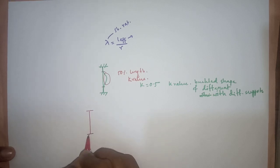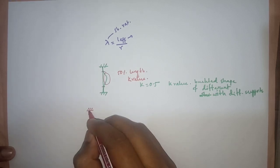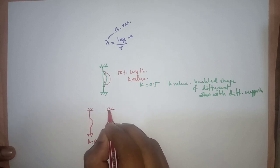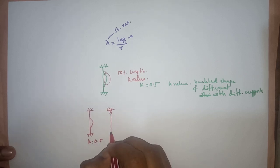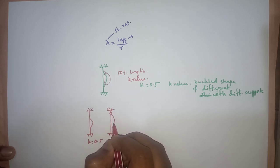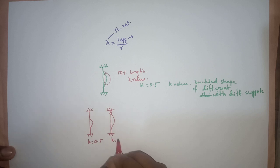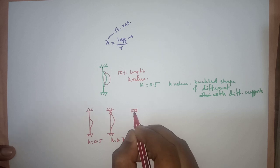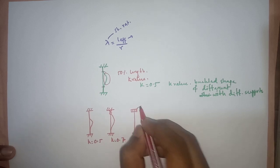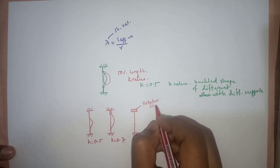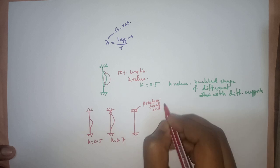If both ends are fixed, this buckled shape will be shown, and k is equal to 0.5. If one end is pin-connected and the other end is fixed, the buckled zone will look like that, so k is equal to 0.7. Another case is if one end is rotation-fixed and translation-free.